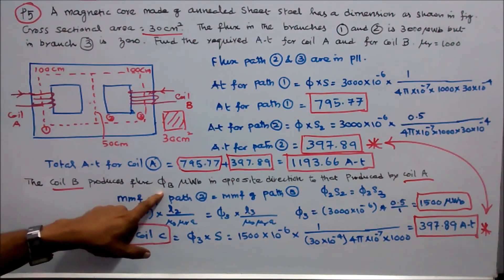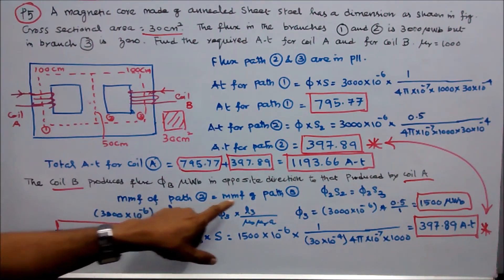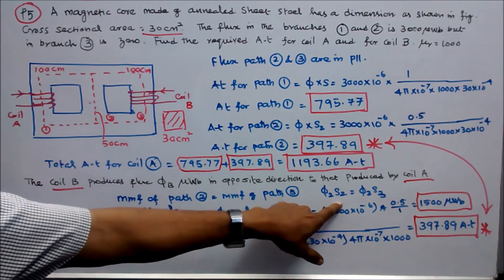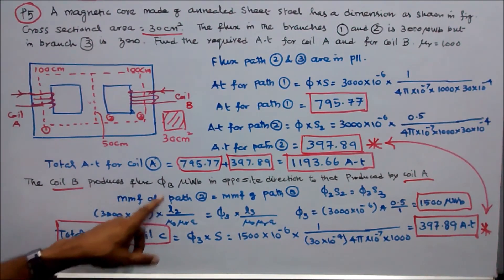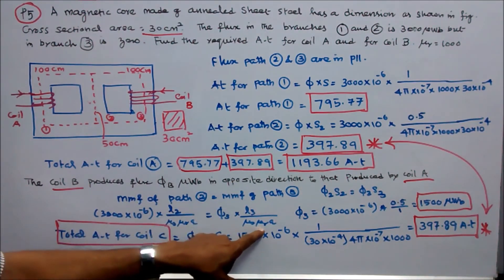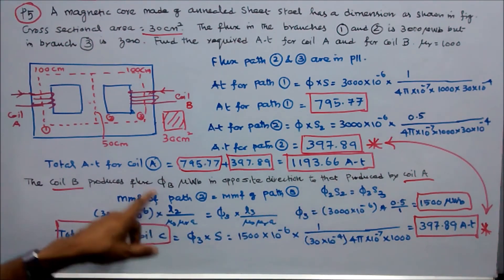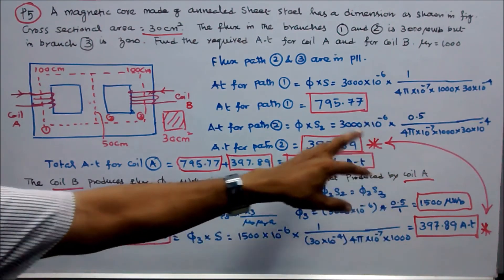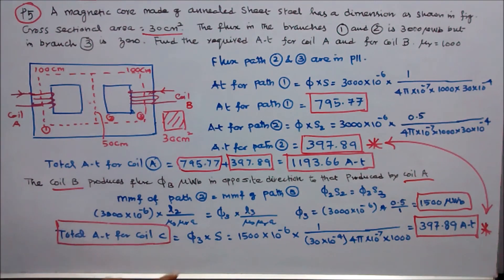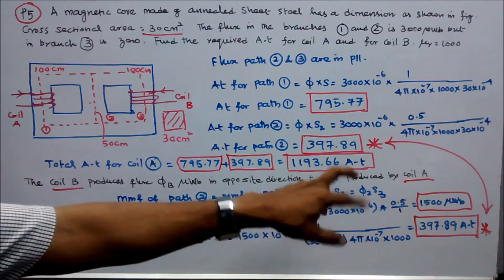Coil B produces flux φB in opposition to φA. Therefore MMF of path 2 equals MMF of path 3: φ2 × S2 = φ3 × S3. Simplifying (μ₀, μᵣ, A cancel): φ3 = φ2 × L2/L3 = 3000 × 10⁻⁶ × 0.5/1 = 1500 microwebb. Total ampere-turns for coil B = φ3 × S = 1500 × 10⁻⁶ × 1 / (30 × 10⁻⁴ × 4π × 10⁻⁷ × 1000) = 397.89 AT.